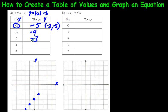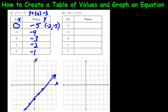You can see a pattern forming here — going down by 1 each time — and that can help you speed up when doing a table of values. So 2 across to the right and down 1. The line keeps going forever, so you can put arrows on the ends. We've plotted the points — we're done.